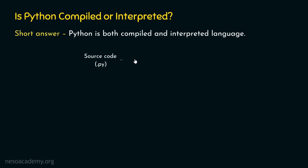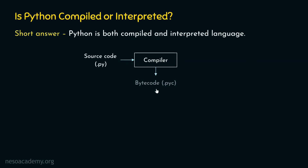First, the source code is provided to the compiler. Source code must have an extension .py because the source code is written in Python — py is short for Python. Source code must be provided to the compiler, and the compiler in turn generates bytecode. The extension of bytecode is .pyc. Bytecode is also called intermediate code, because this code will be provided to the interpreter.